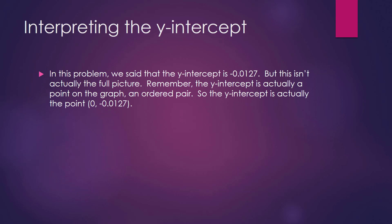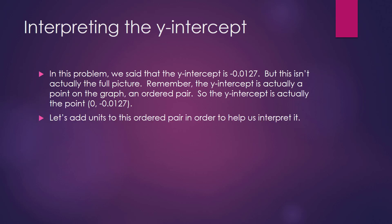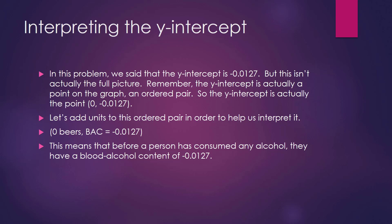Now let's interpret the y-intercept. In this problem, the y-intercept is negative 0.0127. Remember, the y-intercept is actually a point on the graph — it's an ordered pair. So the y-intercept is the point (0, negative 0.0127). The 0 is the X value, which is the number of beers. The second value, negative 0.0127, is a person's blood alcohol content. This means that when a person has had 0 beers, or before they have consumed any alcohol, they have a blood alcohol content of negative 0.0127.